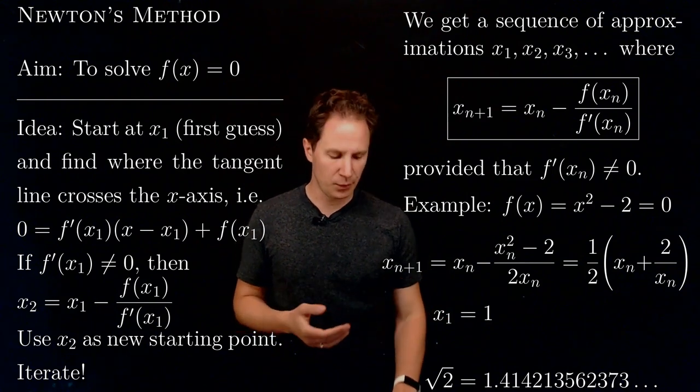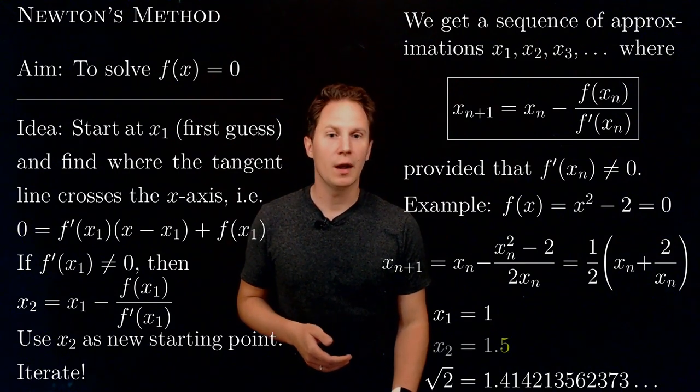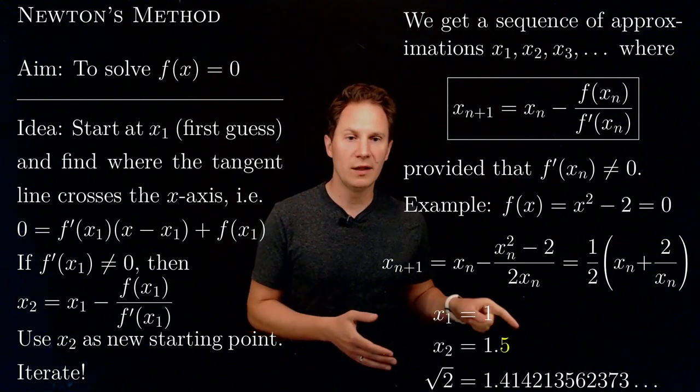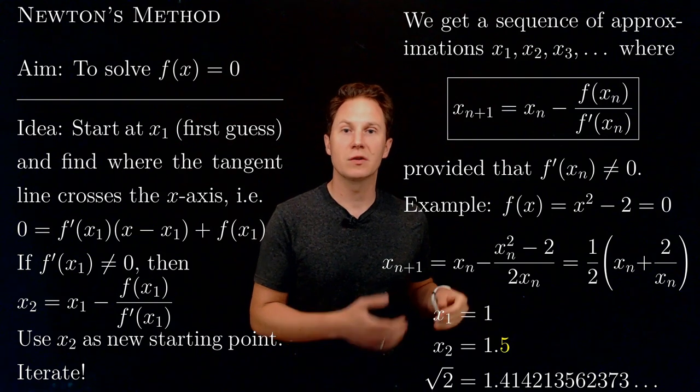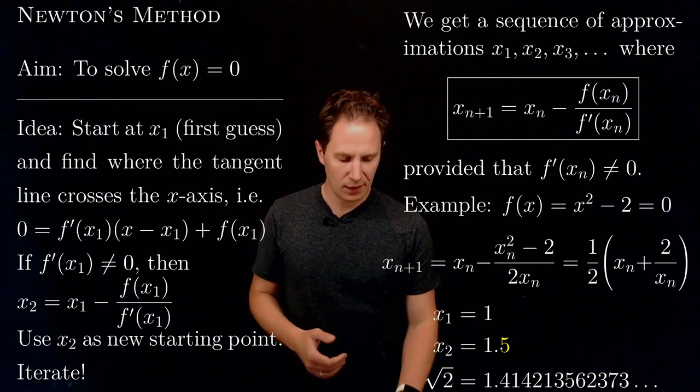Now, what is the next approximation using this formula? x₂ becomes 1.5. With the yellow digit, I indicate the first digit that is not correct in the expansion. So x₂ already fails at the first decimal place.